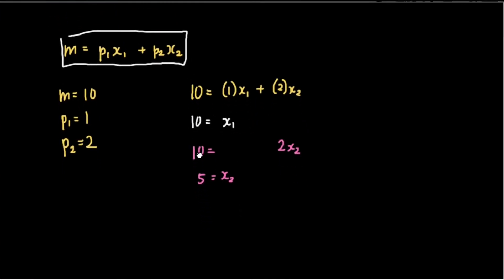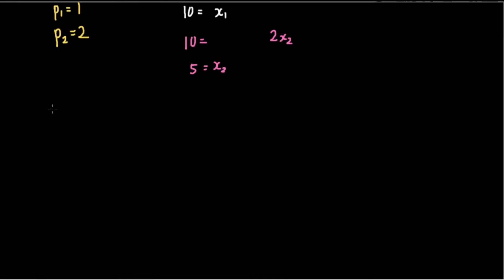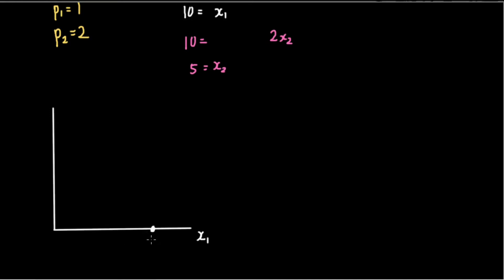When we graph this on our indifference map, we see that on the x-axis we have x sub one, and the point where the consumer consumes only x sub one and uses all of his budget is ten. On the y-axis we have x sub two, and five would be the intercept there. Since this function is linear, we just draw a line from one intercept to the other, and this is what we call our budget line.